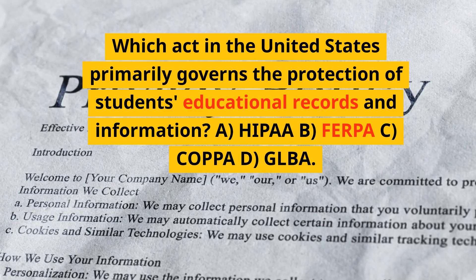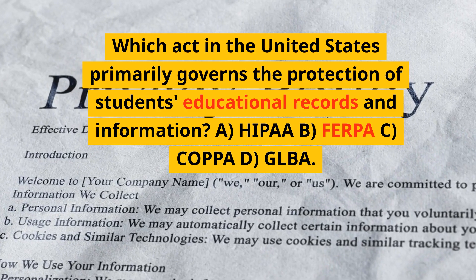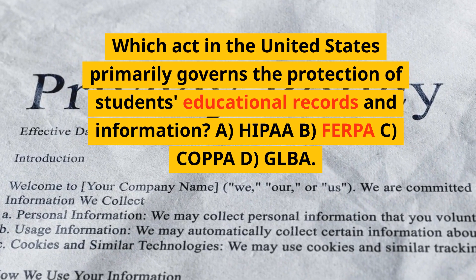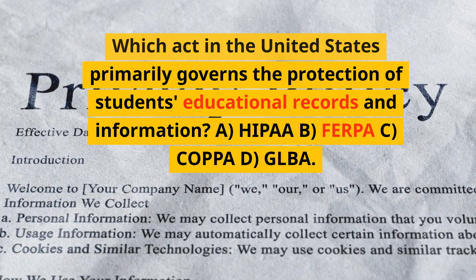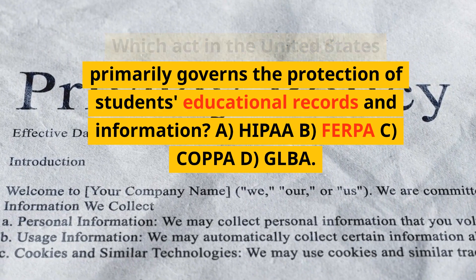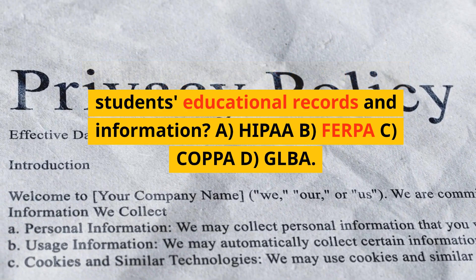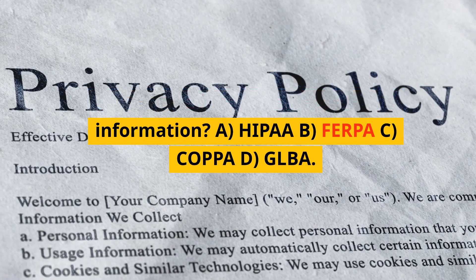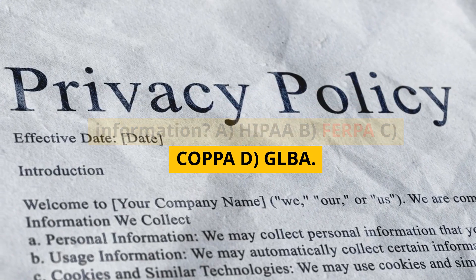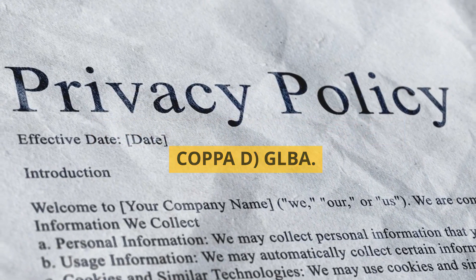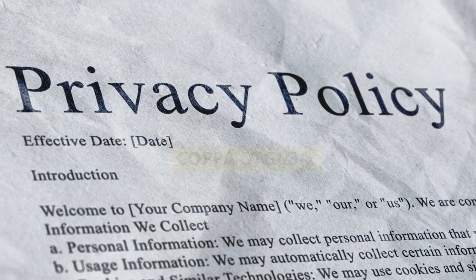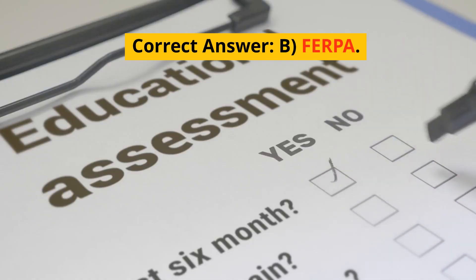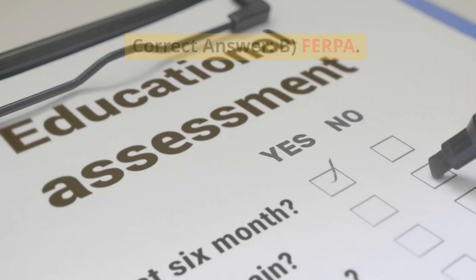Which act in the United States primarily governs the protection of students' educational records and information? A. HIPAA. B. FERPA. C. COPPA. D. GLBA. Correct answer: B. FERPA.